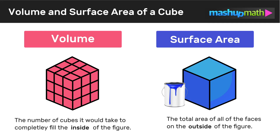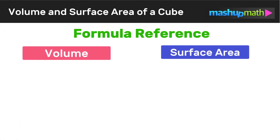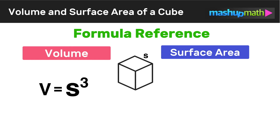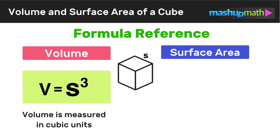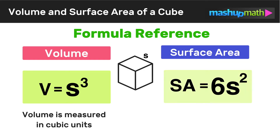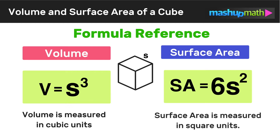Now that we understand the difference between volume and surface area, let's look at the formulas we can use to solve problems. When we have a cube with side length s, the volume is equal to s cubed, or s to the third power. The surface area is equal to 6 times s squared. Remember that surface area is measured in square units. Let's keep these formulas in mind as we work through a few practice problems.